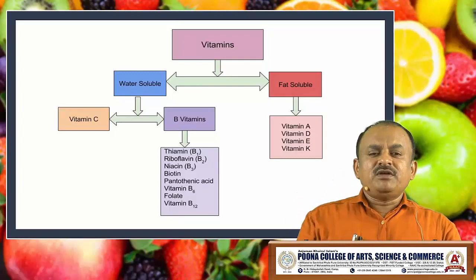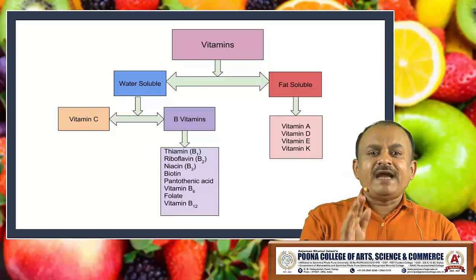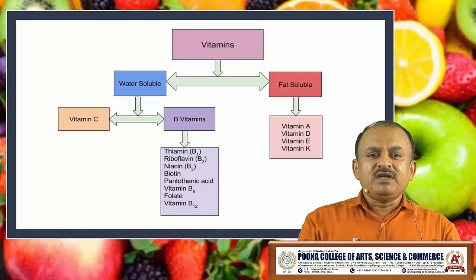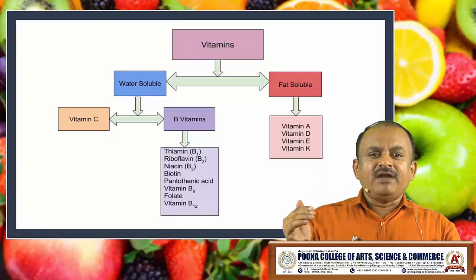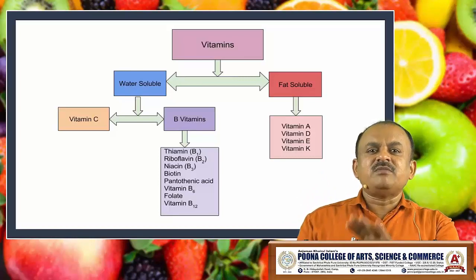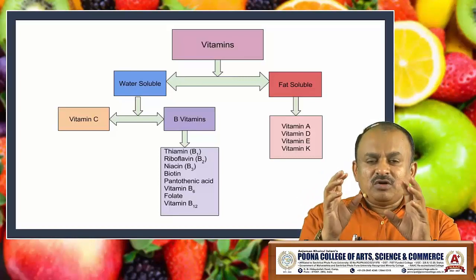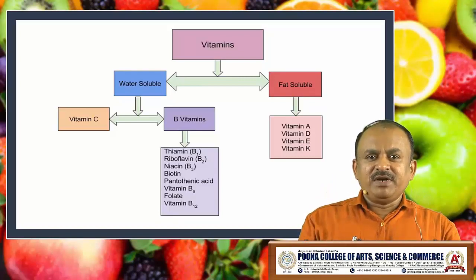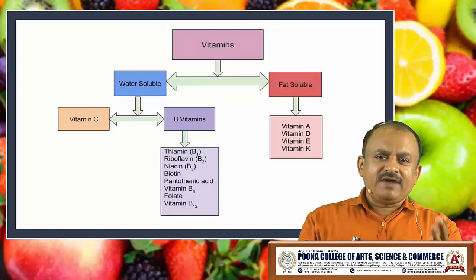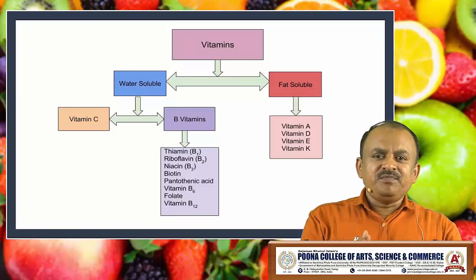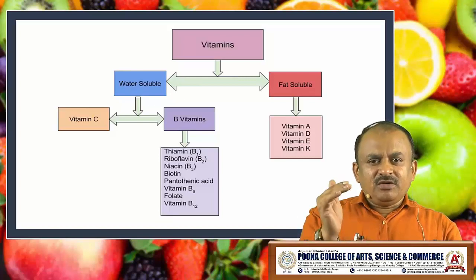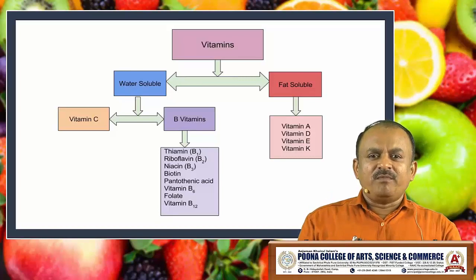The second group of vitamins is fat soluble. Fat soluble vitamins are: vitamin A, vitamin D, vitamin E and vitamin K. Overall, this chart summarizes the complete classification of vitamins — number one, water soluble; second, fat soluble. Water soluble is divided into vitamin C and vitamin B, with different types of B complex series. Fat soluble has four types.